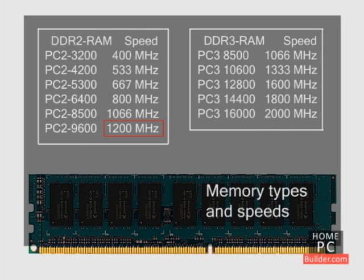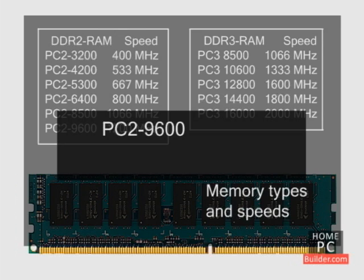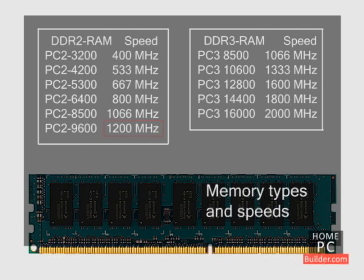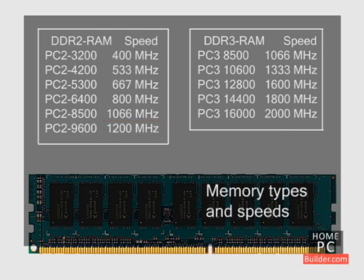To convert from bandwidth to the speed of RAM, you either multiply or divide by 8. So if you want to find the speed of PC2-9600 RAM, divide by 8 and you get 1200, or 1200 megahertz, which is the actual speed of PC2-9600 DDR2 RAM. To go from speed to bandwidth, you multiply by 8.